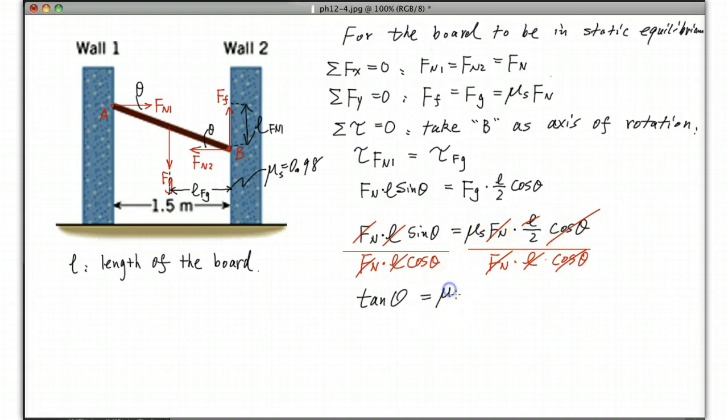So you can see, now what you got left is tangent theta equals μs over 2. So you got μs divided by 2. And 0.98 divided by 2 should be 0.49. So now, just use a calculator to find the angle. And we get theta equals 26.1 degrees.